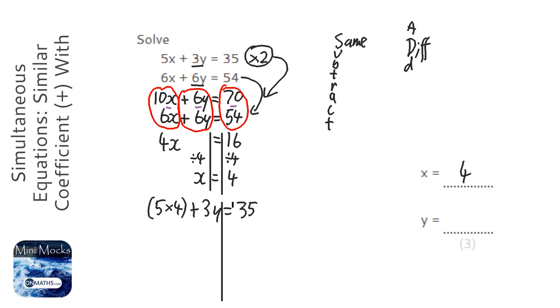I put my lines in. So it's 20 plus 3y equals 35. Take away 20 from both sides.